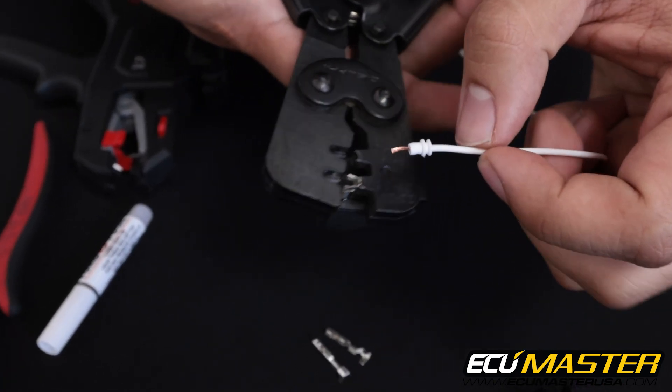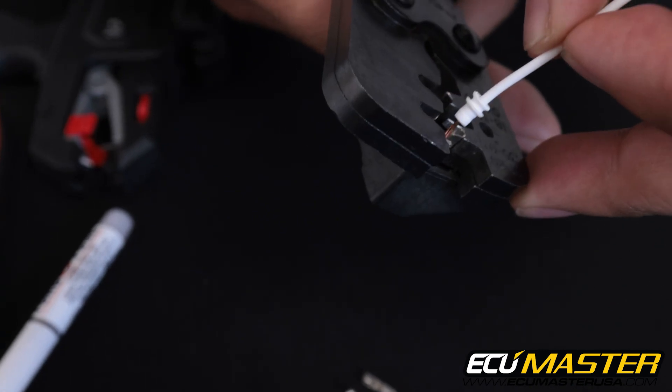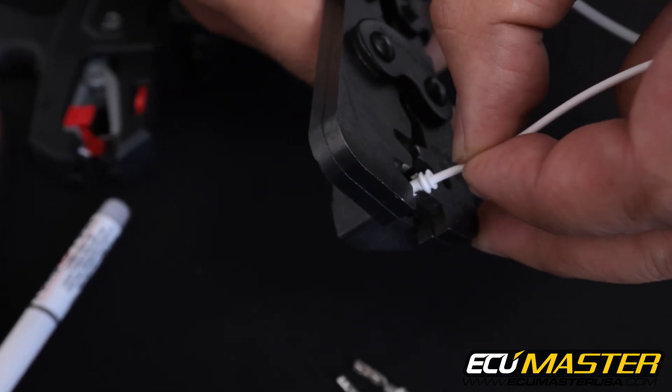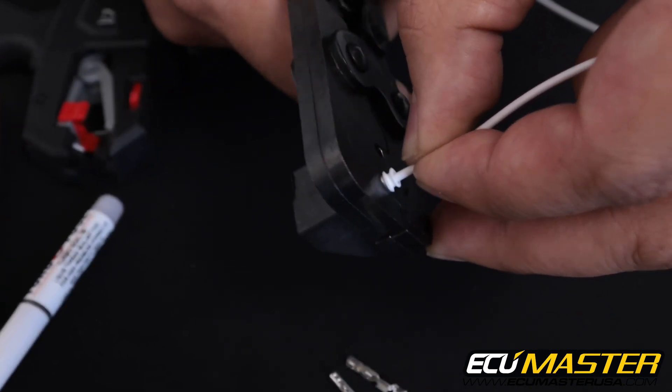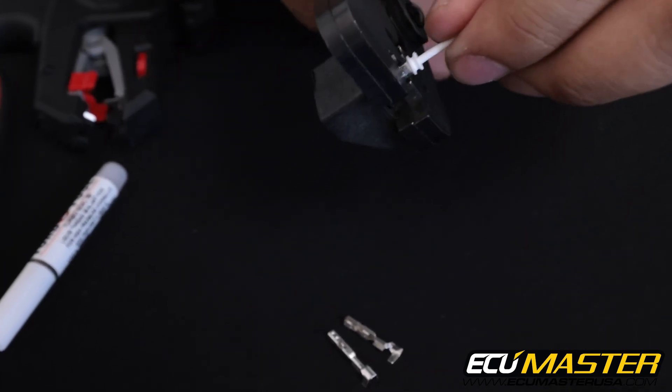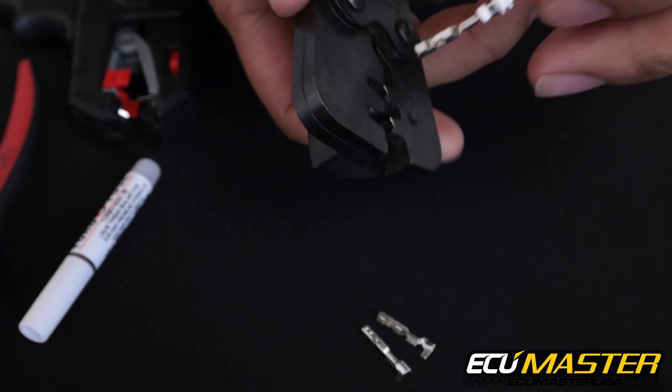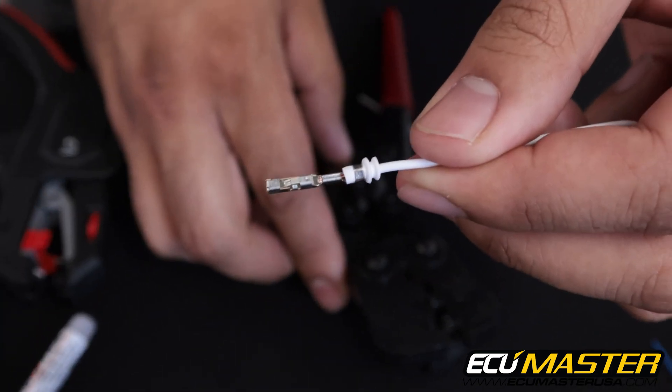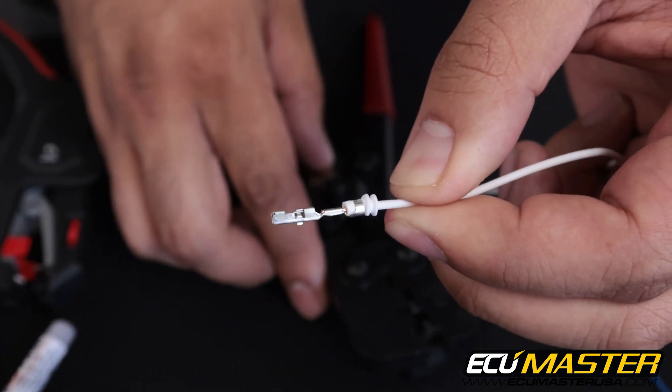You're going to slide the conductor all the way forward, leaving the copper exposed. We're going to insert and crimp slowly. There you go, successfully terminated wire into this GT150.